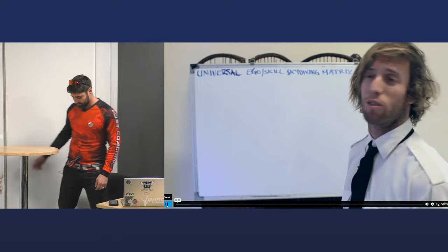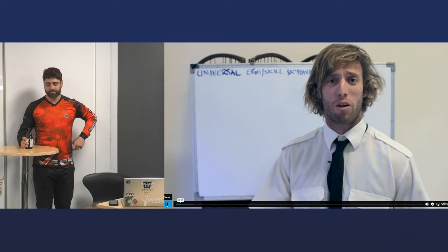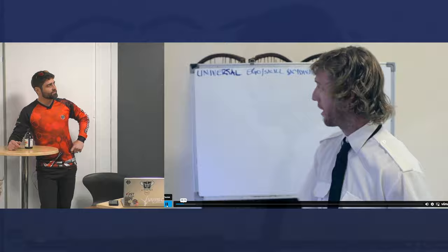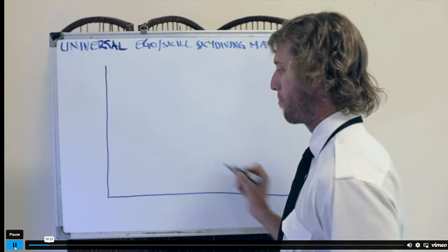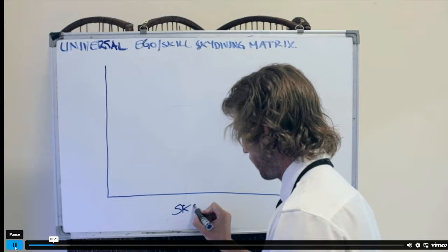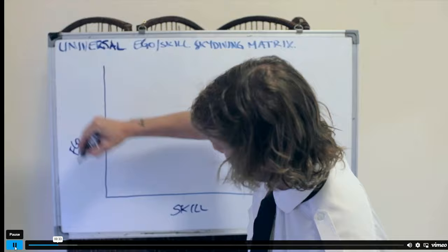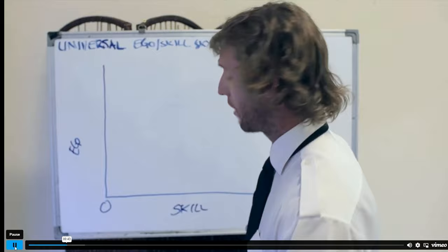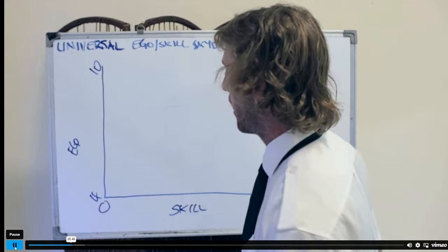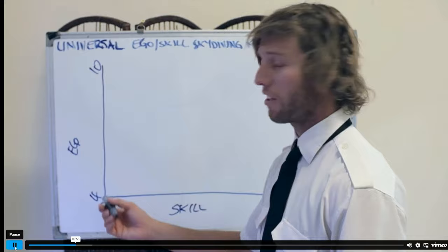This is the universal ego skills skydiving matrix — everything you need to know about who you want to hang out with at the drop zone, who you want to jump with, and who you want to be. This is a graph with two axes: down here is our skill axis, measured from zero to ten. Over here we've got our ego axis, and as skydivers, we measure our ego axis from four to ten — because there ain't a skydiver out there with an ego less than a four.